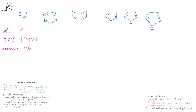When we look at benzene, we see that it has 6 carbons that are all sp2 hybridized, and we have a total of 6 pi electrons. Those 6 pi electrons are essentially 3 pairs of pi electrons, and since we have an odd number of pairs of electrons, benzene would be aromatic.